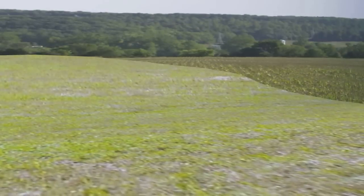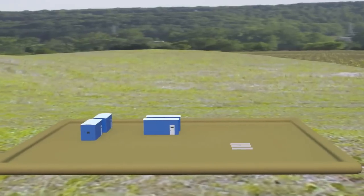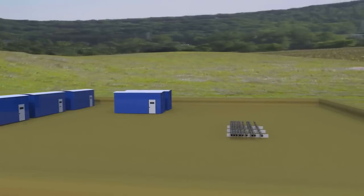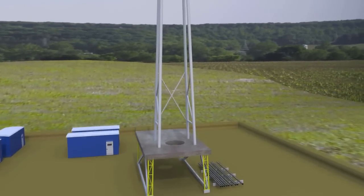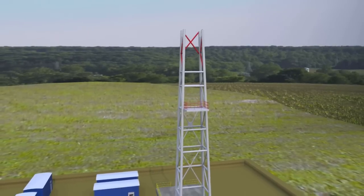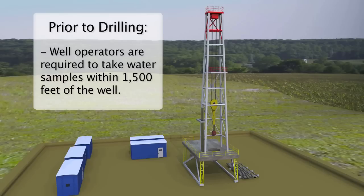ODNR oversees all facets of each drilling operation in Ohio, from its inception to its conclusion. Oversight begins with the permitting and construction of a well site, and continues through drilling and closure of the well. ODNR inspectors are on-site to ensure that well site construction is completed in accordance with Ohio's stringent laws and regulations.